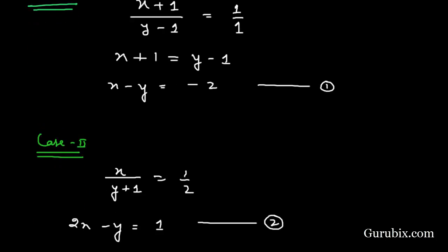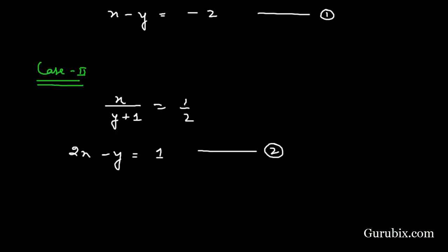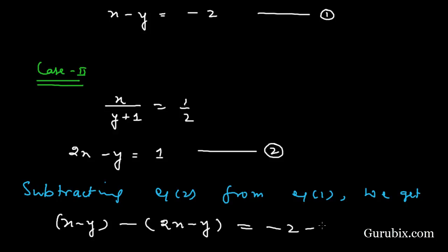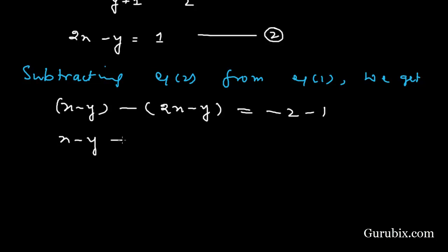Now we shall apply the elimination method to solve these two equations. We observe that the coefficients of y in both equations are the same, so we subtract equation 2 from equation 1. We get: x minus y minus (2x minus y) equals minus 2 minus 1. The y terms cancel out, leaving minus x equals minus 3.